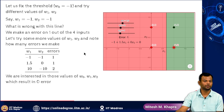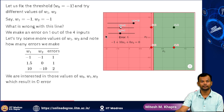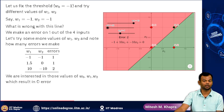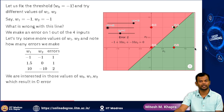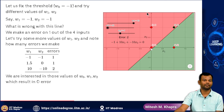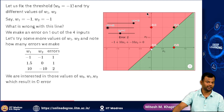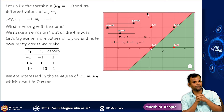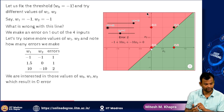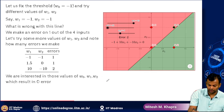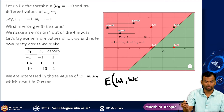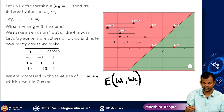Now let us try w1 = 10 and w2 = -10. Now I am making an error of 2 because one of the red points is in the positive half space and the green point is actually in the negative half space. Only the two red points (0,1) and (0,0) are in the right place. So as I am changing the values of w1 and w2, the error or the number of errors is changing. I can think of error as a function of w1 and w2, because w0 is fixed.